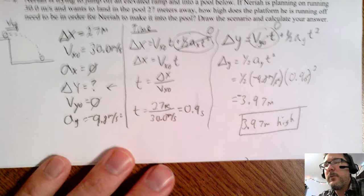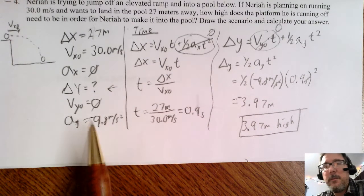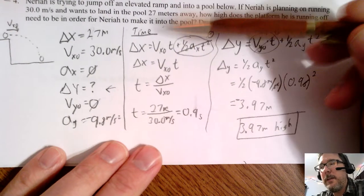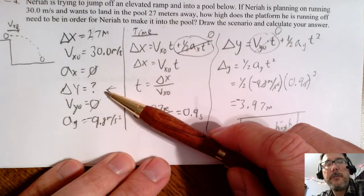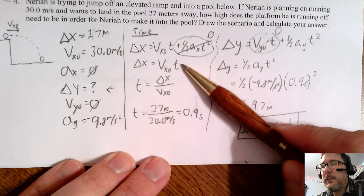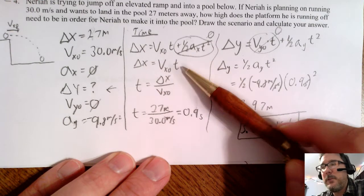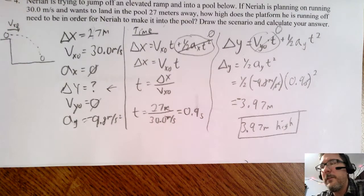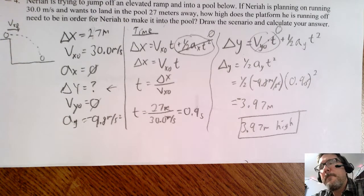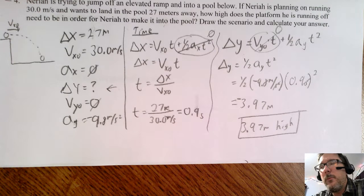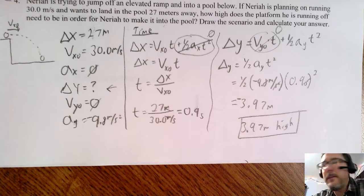To recap: list all variables — all x's and all y's. Find time — use the x equation in this case since we don't have enough y info. Pick the equation, find time, then plug into the appropriate y equation using the time you just found. He's falling, going from side to side, and we know the whole path. That's all there is — you just find the time.